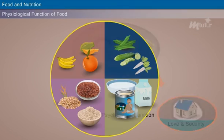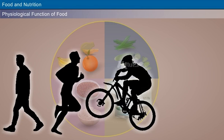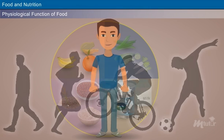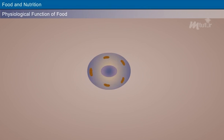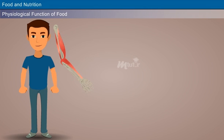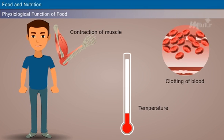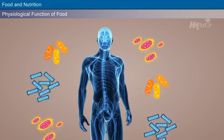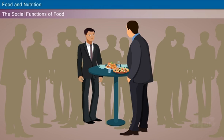Functions of food: there are three basic functions of food, which include physiological function, social function, and psychological function. The primary physiological function of food is to provide energy for carrying out the activities performed by us. The second important physiological function is to build the body and replace worn-out cells. The third function is to regulate the activities of the body, such as contraction of muscles, clotting of blood, and maintenance of body temperature.